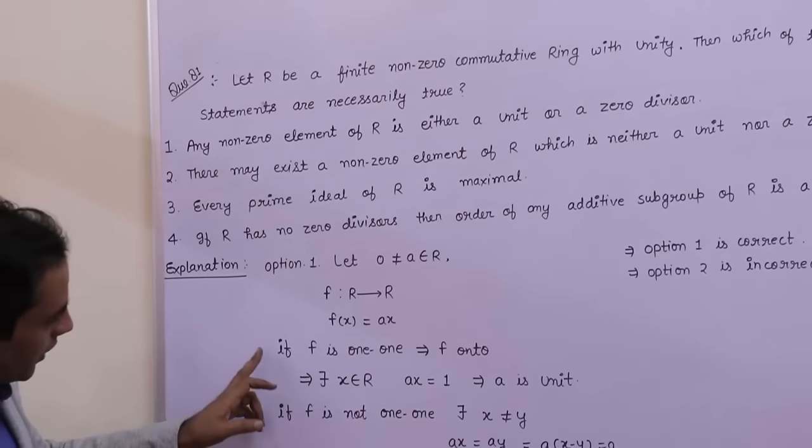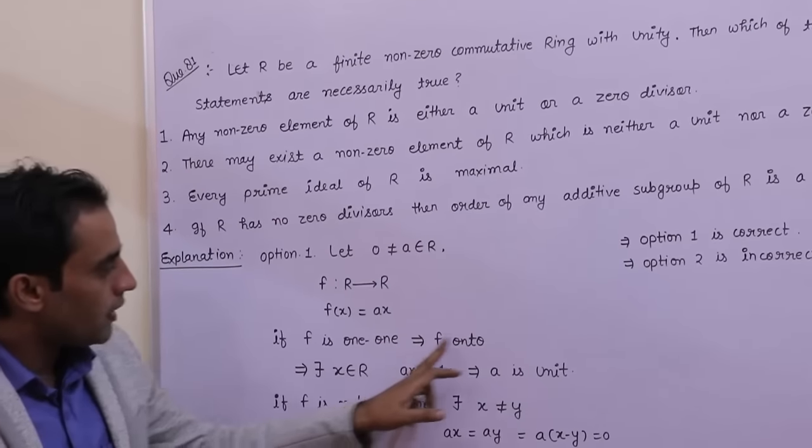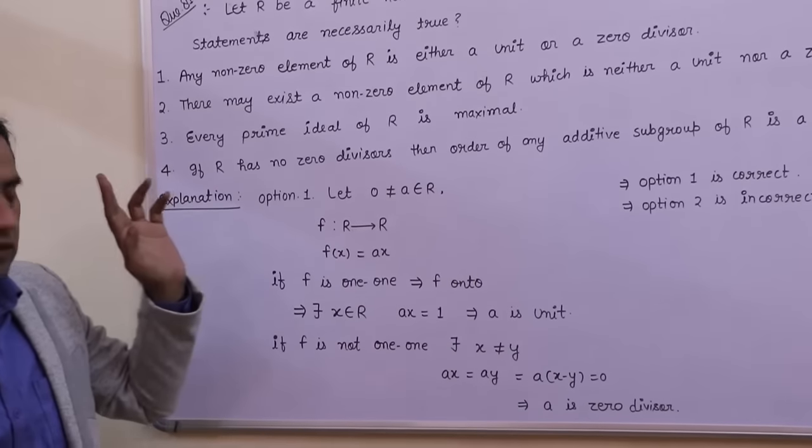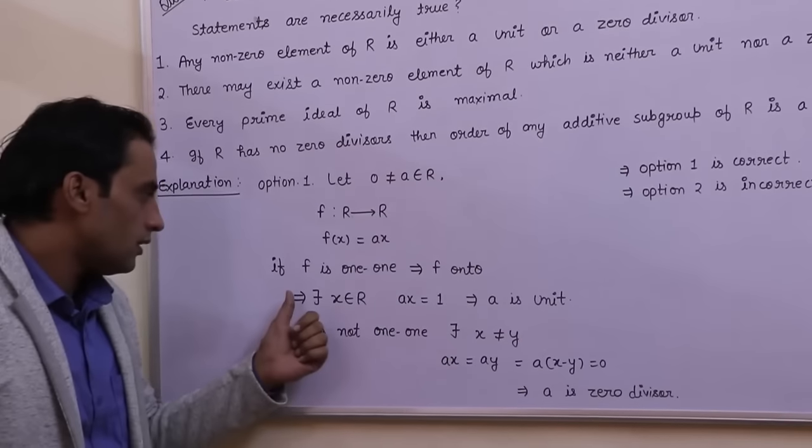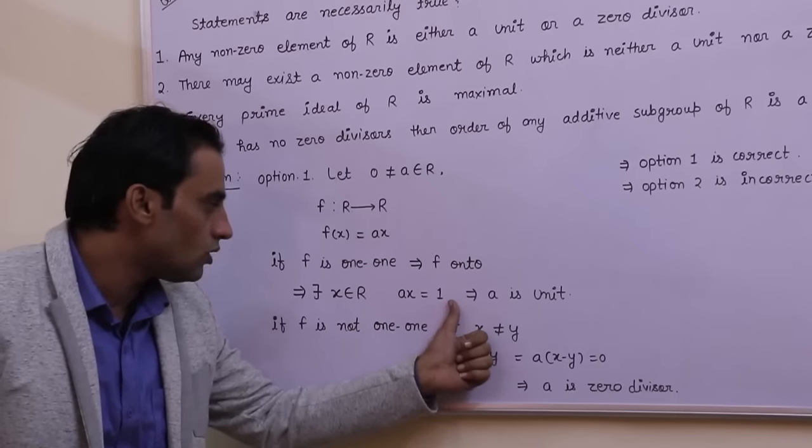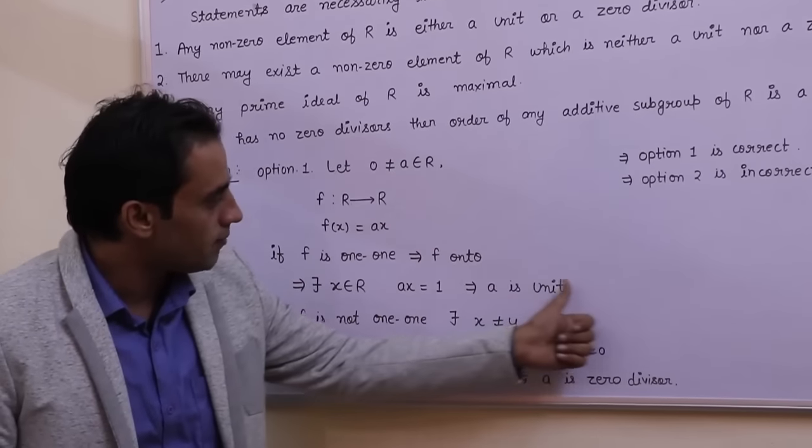First case: if F is one-one, implies F must be onto because R is a finite CRU. So if F is one-one, there exists X in R such that AX equals 1, implies A must be unit.